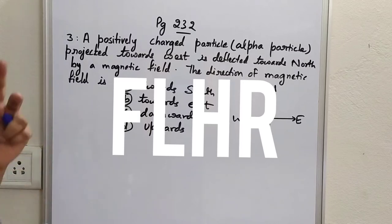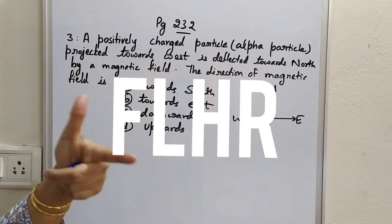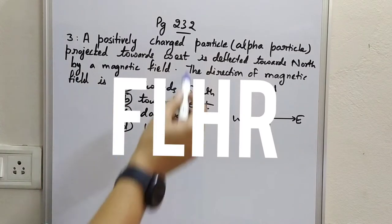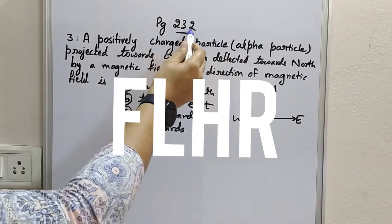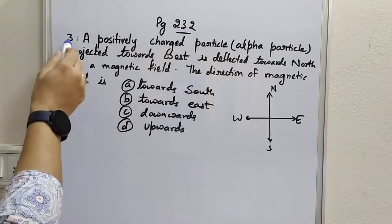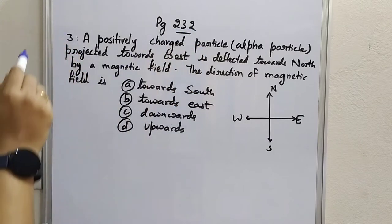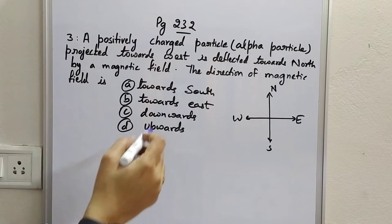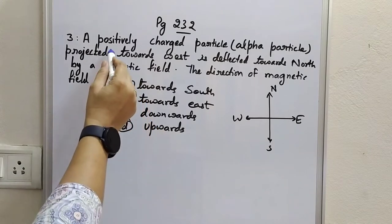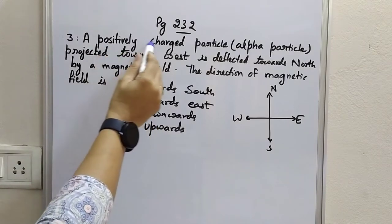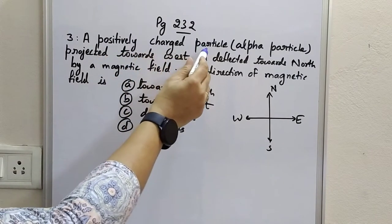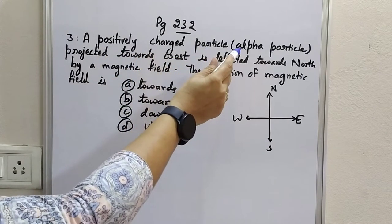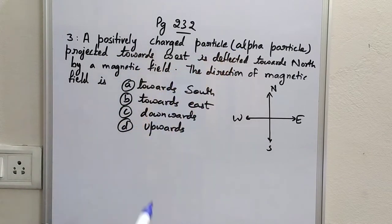One more application of Fleming's left hand rule — page 232, number 3. It is a question in the NCERT textbook. The question is about a positively charged particle, meaning an alpha particle.